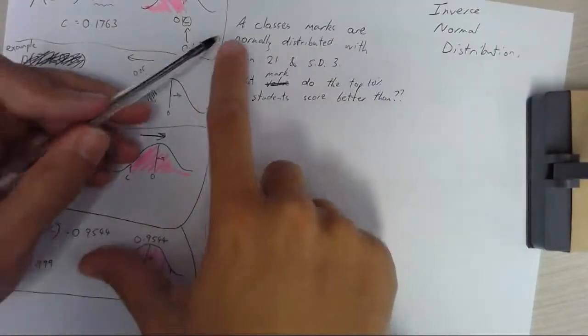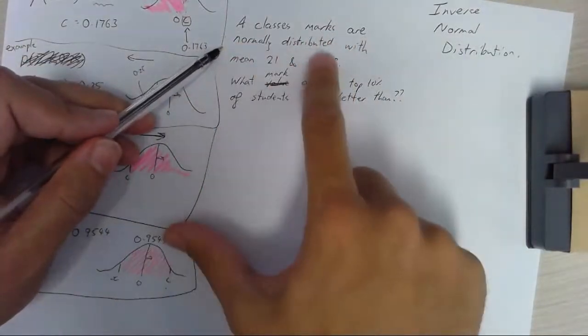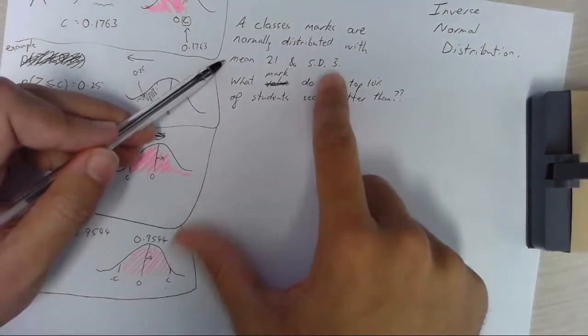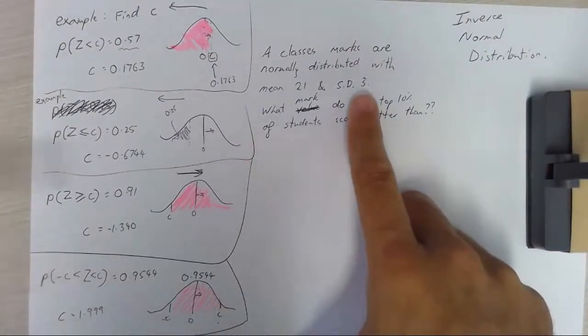So here let's do one more question. A class's marks are normally distributed with mean 21 and standard deviation 3. So it's not a standard normal like all these were.